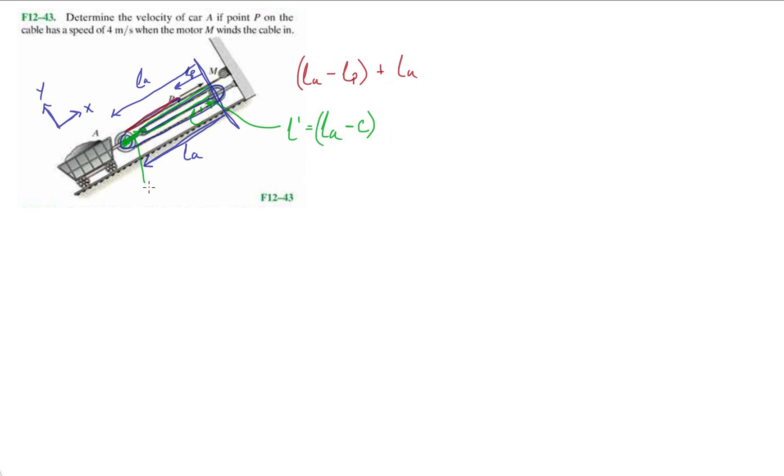This distance between the two pulleys is C. When we plug it all in here, we should have LA minus LP plus LA plus two of those LA minus C equals the total length of the string.